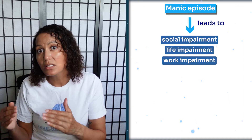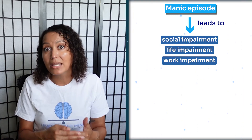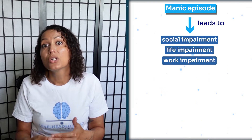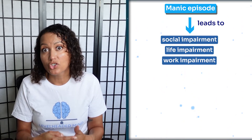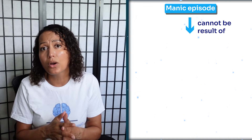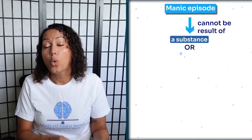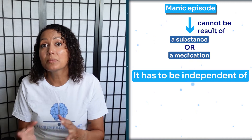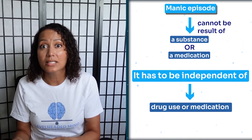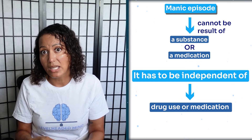That is where the manic episode can really lead to social impairments and impairment in life and work — one of the key features of a manic episode is that it will impair social and work function. It also cannot be the result of a substance or medication; it has to happen independently of drug use or a medication.